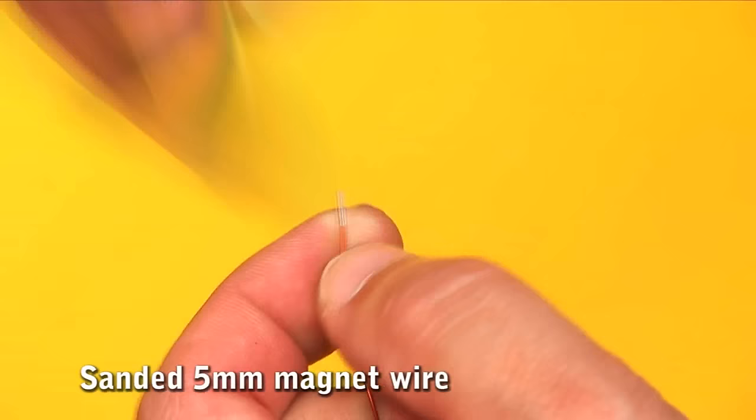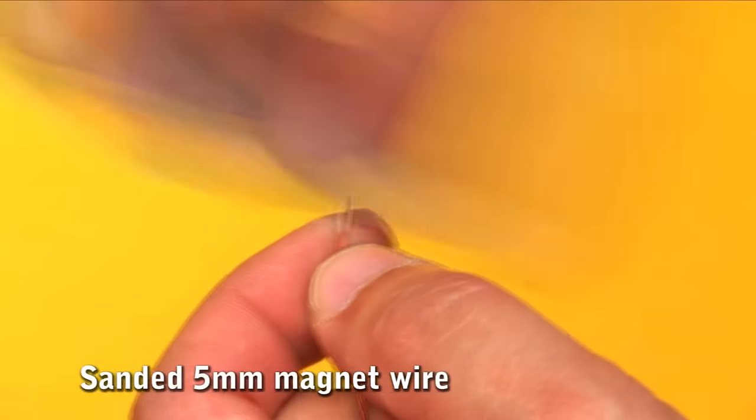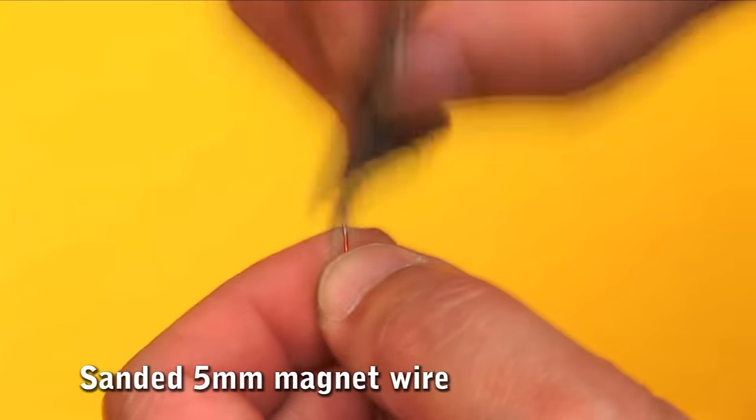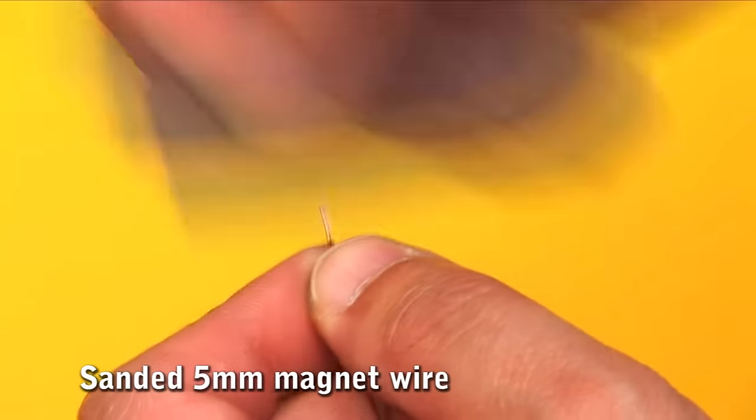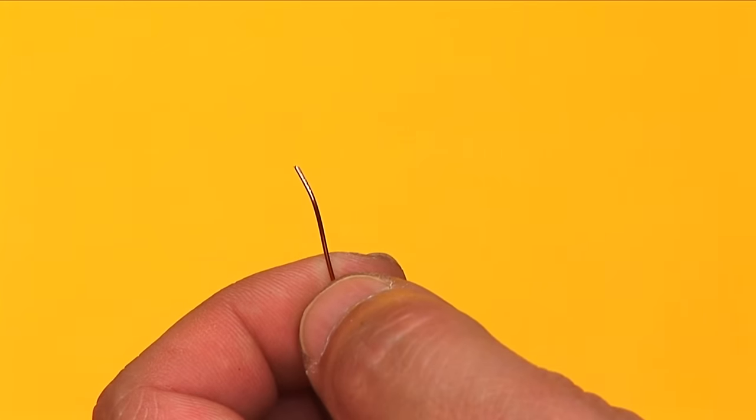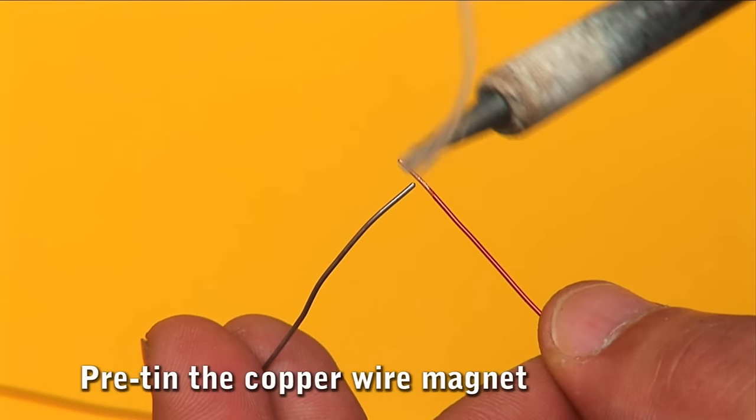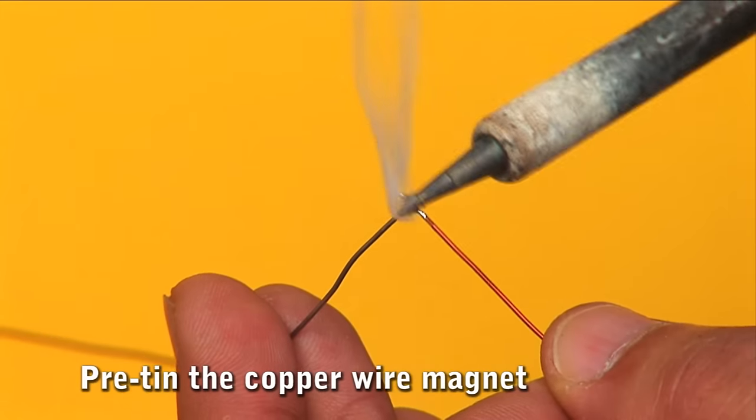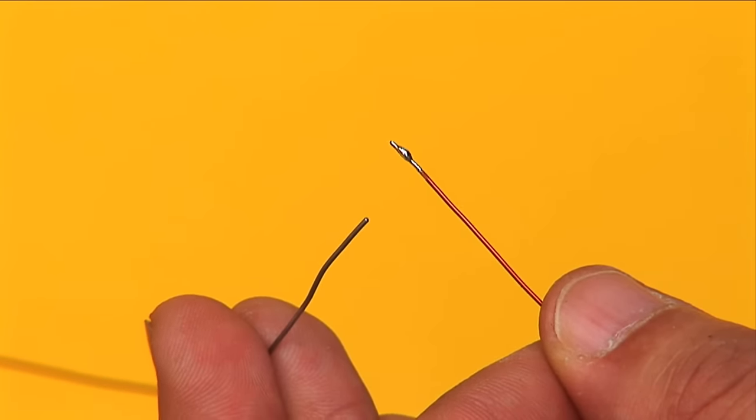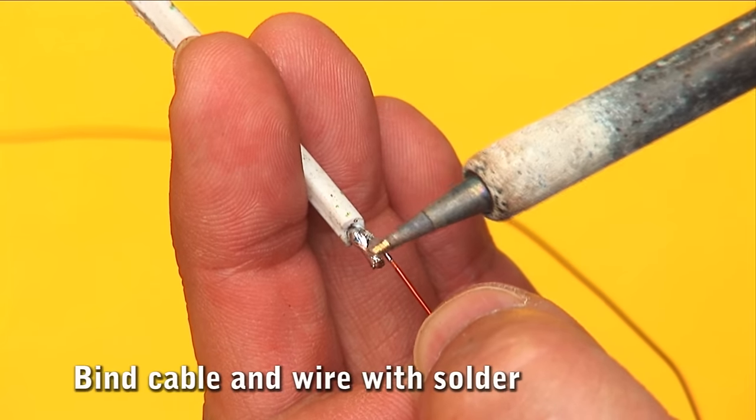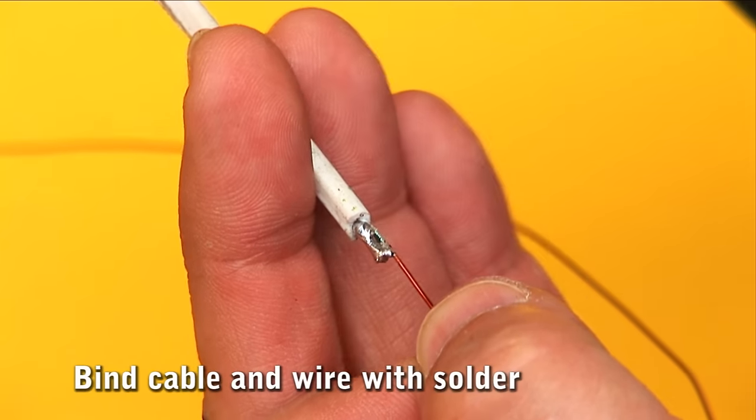It is necessary to sand a few millimeters from the tip of the wire to remove the varnished layer that provides electric isolation. Pre-tin the wire tip copper. We connect the wire and cable, melting the solder with the soldering iron.